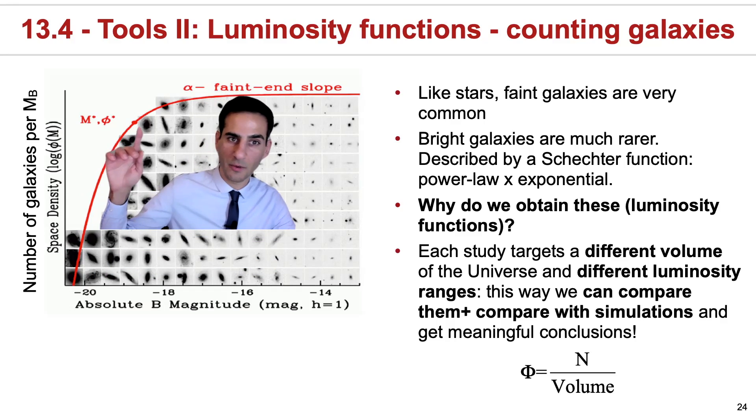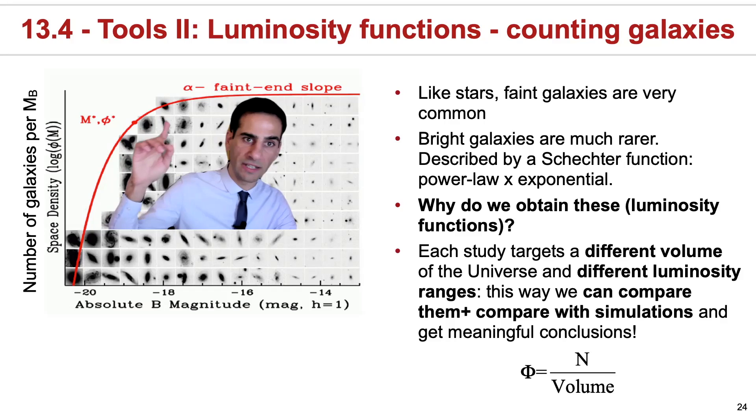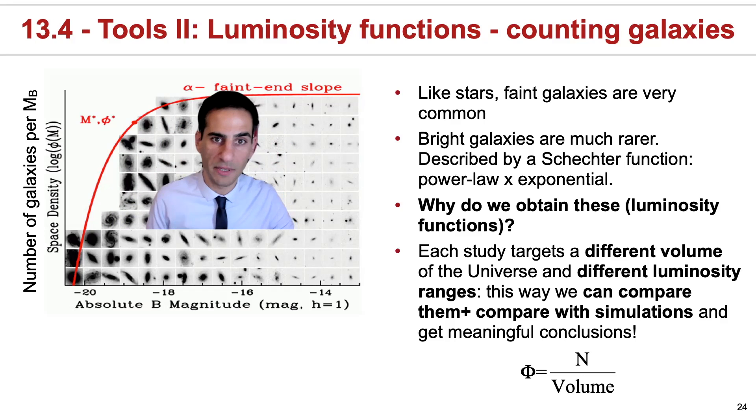Galaxies pretty much like the Milky Way are very typical, but then galaxies which are even fainter actually dominate the number of galaxies in the universe.